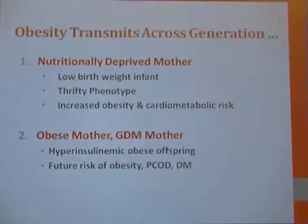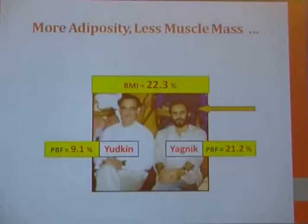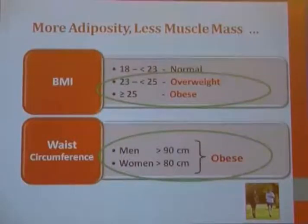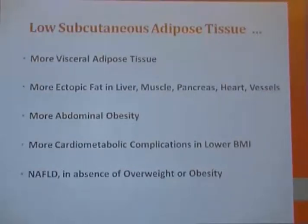Obese mothers and GDM mothers deliver hyperinsulinemic obese offspring with future risk of obesity, PCOS, and diabetes mellitus. Different BMI cut points and the role of waist circumference according to ethnicity is very important because Indians have more adiposity and less muscle mass compared to their European counterparts. In India, the diagnostic criteria is 23–25 for overweight and more than 25 for obese, with waist circumference taken into account. There is low subcutaneous adipose tissue — a marker of Indian obesity — and more visceral adipose tissue and ectopic fat in the liver, muscles, pancreas, heart, and vessels.